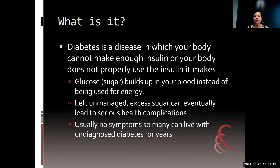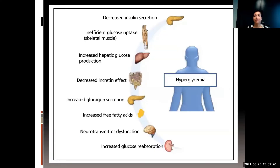People usually have no symptoms and can go with undiagnosed diabetes for years. Not everybody knows how close they are to diabetes. Once they get the diagnosis of diabetes, unfortunately it is already affecting eight different organ systems — everything from the pancreas to skeletal muscles to the liver to the incretin cells in the gut to glucagon secretion, free fatty acids, neurotransmitters in the brain, and glucose reabsorption in the kidneys.